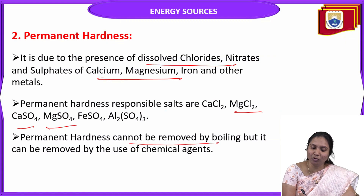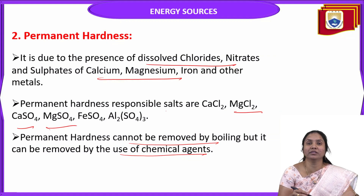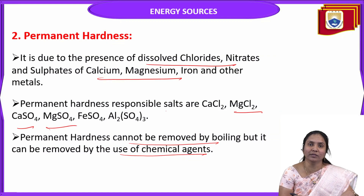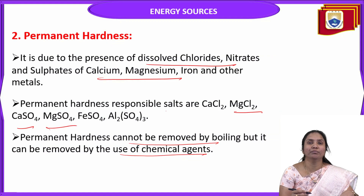Permanent hardness cannot be removed by boiling, whereas temporary hardness can. Permanent hardness can be removed by the use of chemical agents — by internal treatment methods or by scrubbing, using chemicals such as Calgon. These chemicals dissolve the scale, jars, or precipitates present in water, making them soluble so they can be removed by filtration.